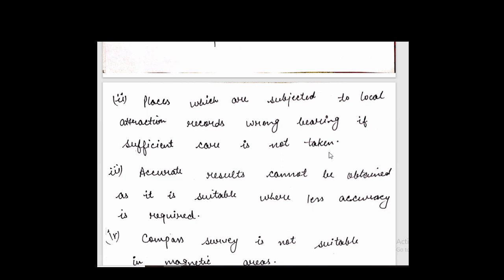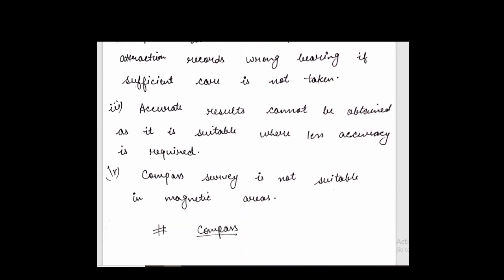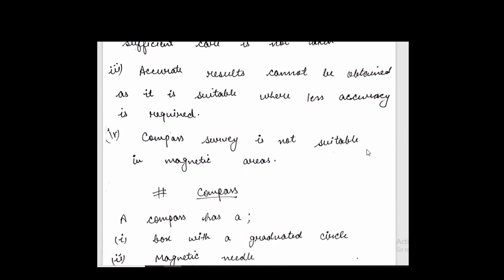Otherwise, without local attraction, it will be perfect. Accurate result cannot be observed. It is suitable when lack of accuracy is required. So what do we need to do? For accurate work, we need to avoid the attraction from the magnetic field. Then the angles we can easily find.